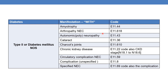For diabetes mellitus with autonomic neuropathy or autonomic polyneuropathy, the code is E11.43. Note that for simple polyneuropathy there is a separate code — E11.43 is specifically for autonomic neuropathy or autonomic polyneuropathy. For diabetic cataract, the code is E11.39. And for diabetes mellitus with Charcot joints, the code is E11.610.